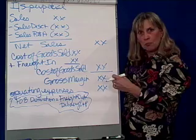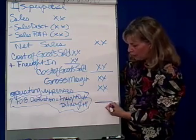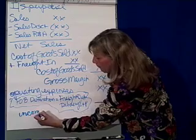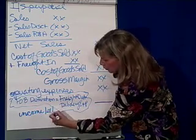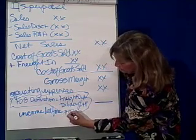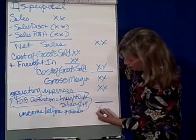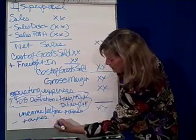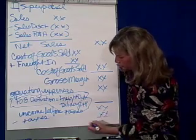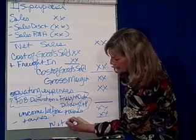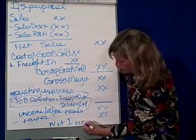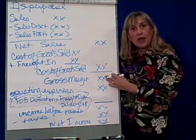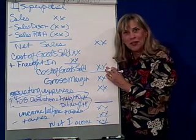Gross margin minus operating expenses gives me income before taxes. We subtract our tax expense to come up with net income. So this is the income statement from a perpetual point of view.